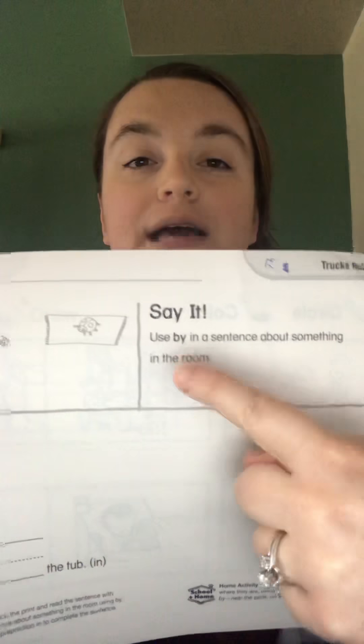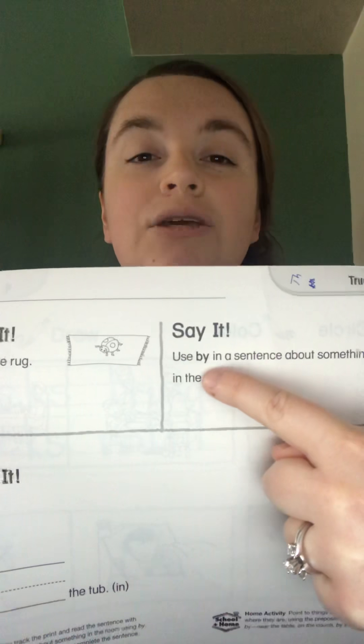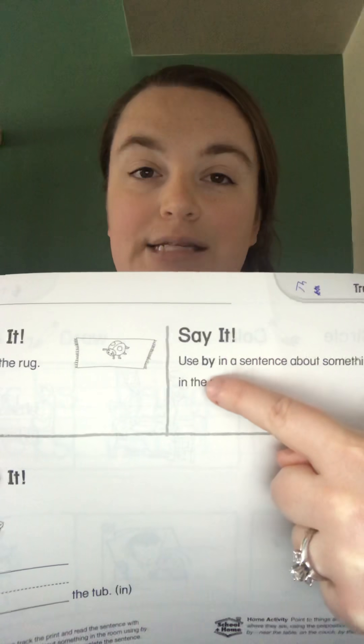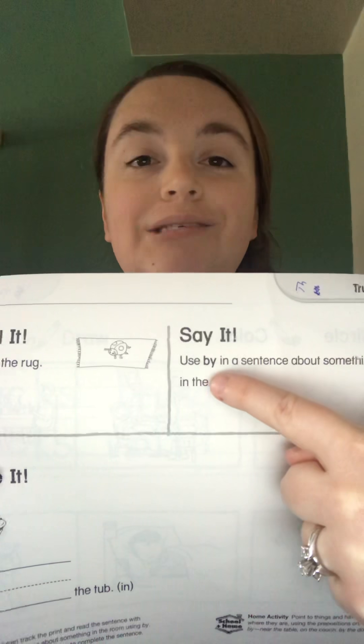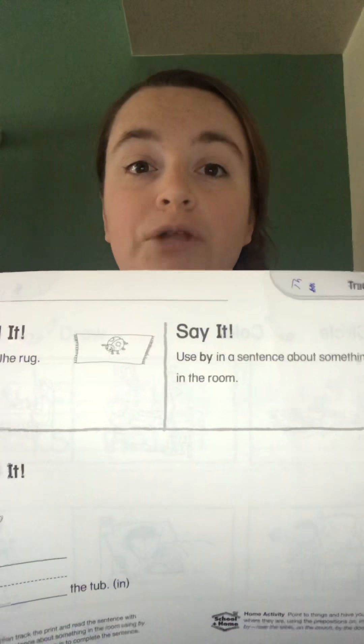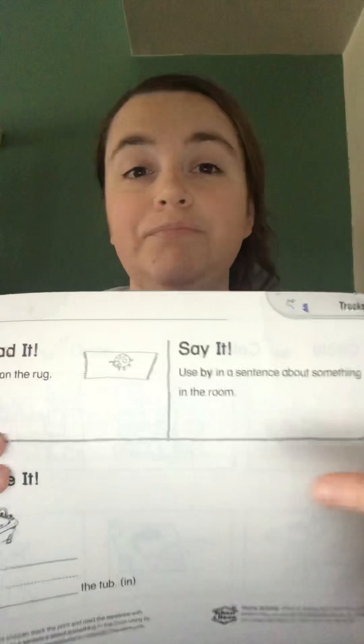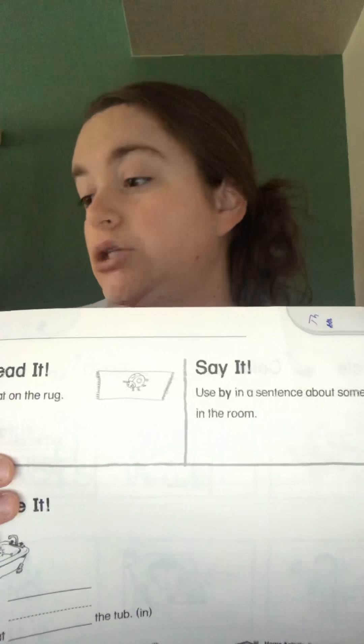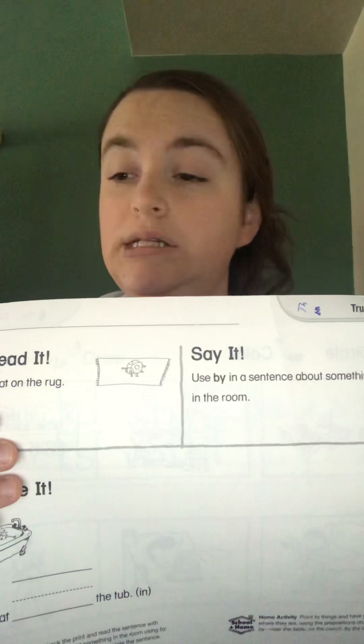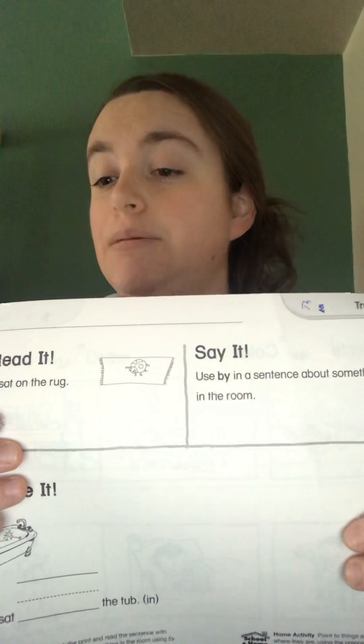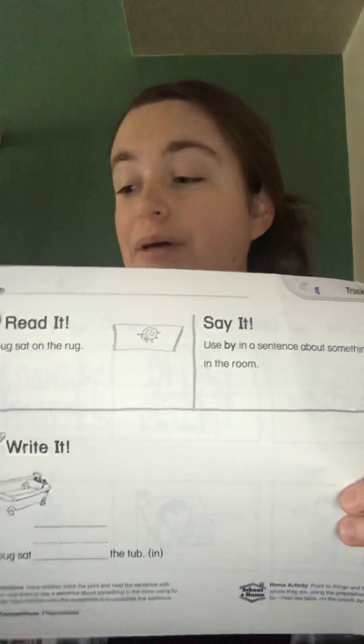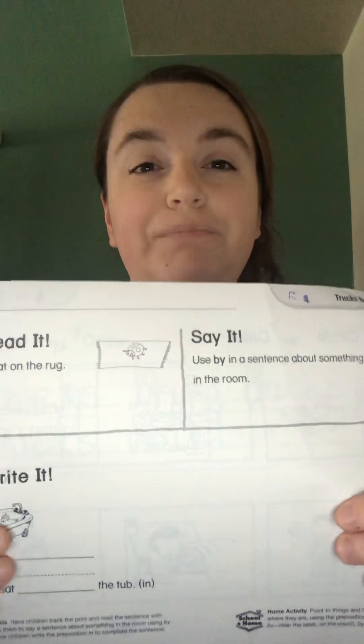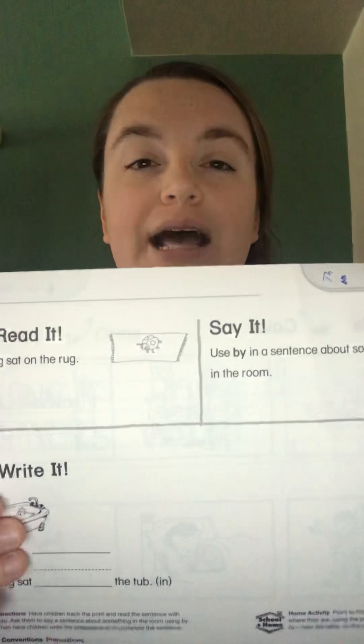Then when you come over to this side, it is asking you to use the word by in a sentence, B-Y. Use the word by in a sentence and look around the room that you're sitting in right now. What could you say using the word by? If I was going to do this, I might say my sentence might be that my pen is by my folder because I have my pen and my folder right next to each other. So make your own sentence and say it out loud.